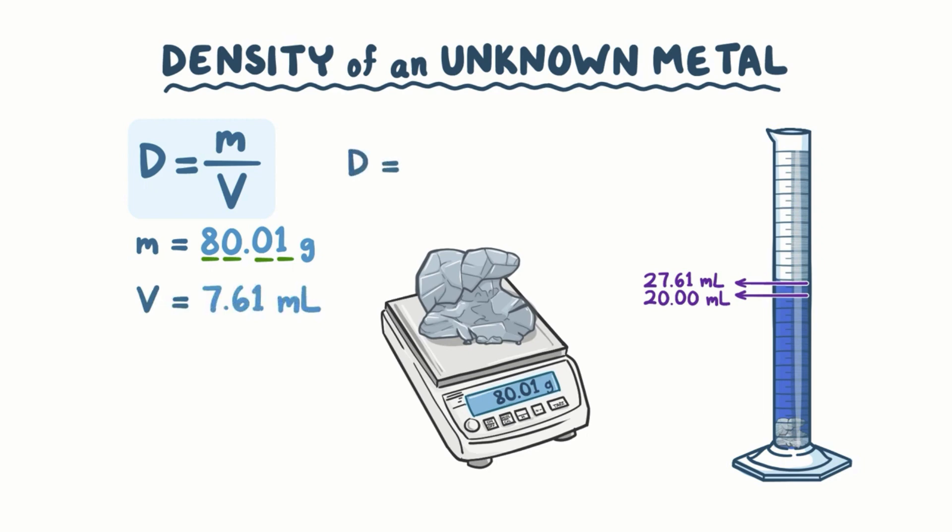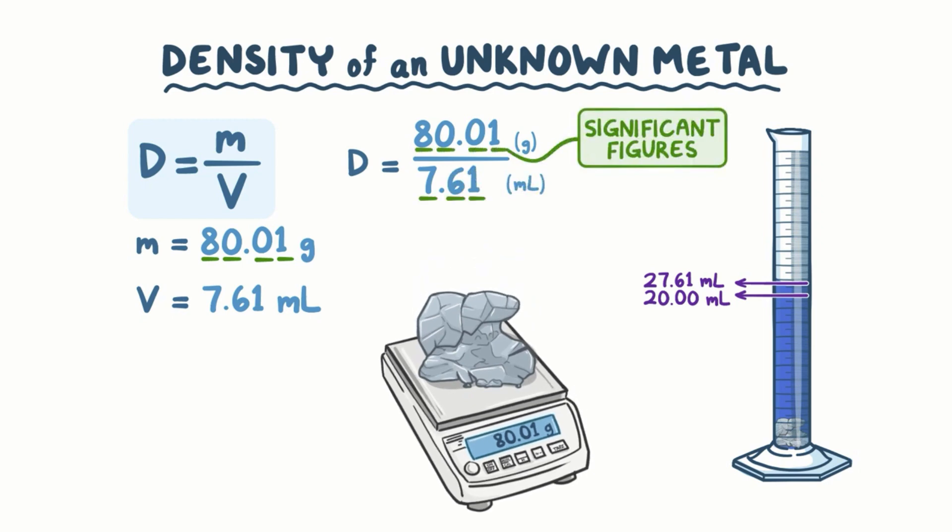To find the density of our unknown metal, we take the mass divided by the volume. So that's 80.01 grams divided by 7.61 milliliters. We have 4 significant figures in our numerator and we have 3 significant figures in our denominator. We are limited by the smaller number of significant figures for the accuracy of our answer. So our answer is limited to 3 significant figures. The final answer should be 10.5 grams per milliliter. Now we can look this value up in a reference table, which would tell us that our unknown metal is probably silver.